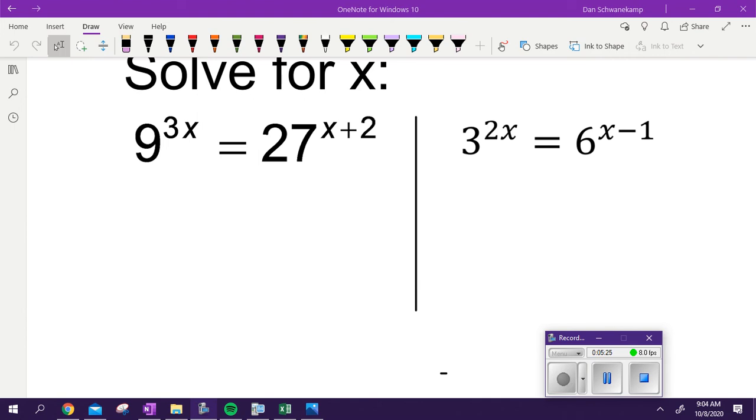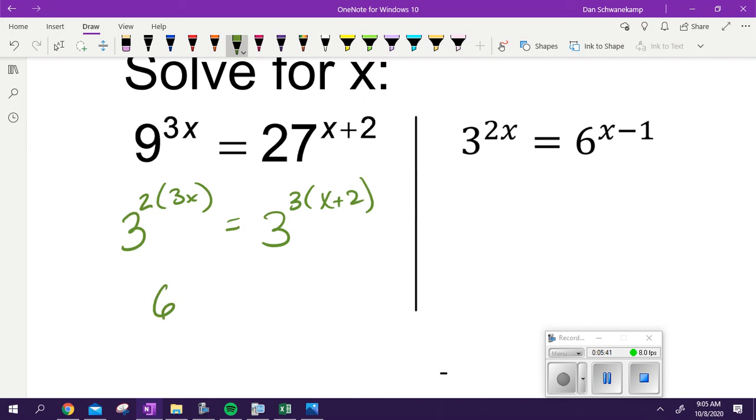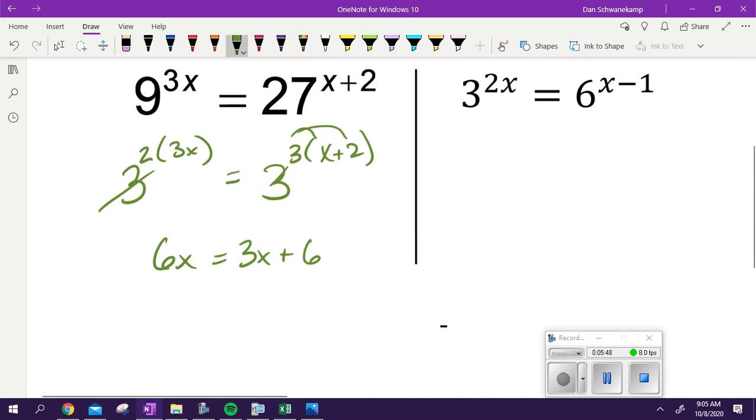On this second problem here, we're struggling a little bit. First one we seem to be doing fine. Lots of just little silly things on the first one. Make sure you're setting it up correctly. We're going to rewrite both sides to be a base of three. This is 3 squared times 3^x, this is 3 cubed times x plus 2. This is 6x. Make sure you're distributing there to get 3x plus 6.